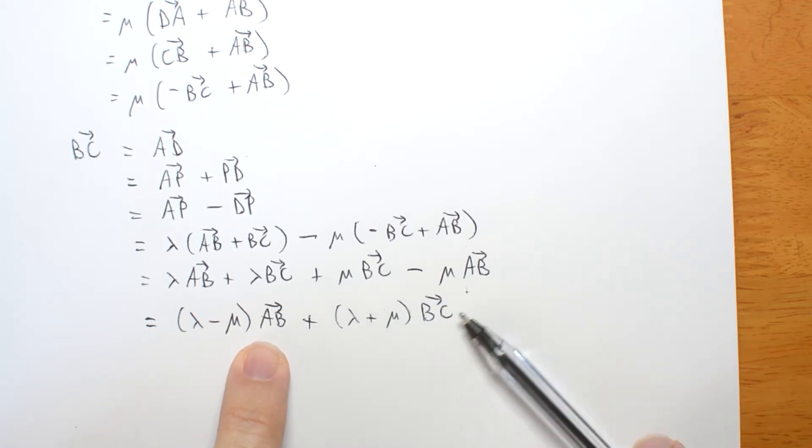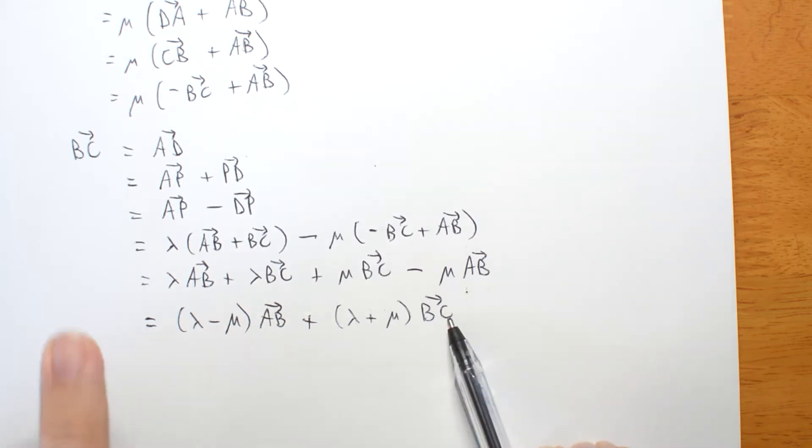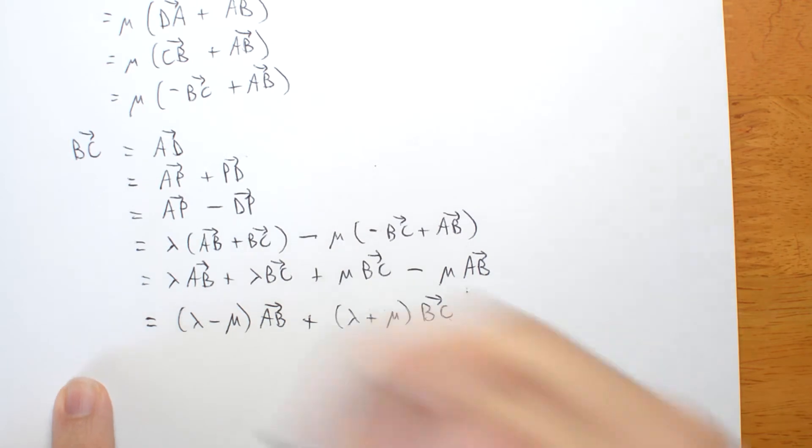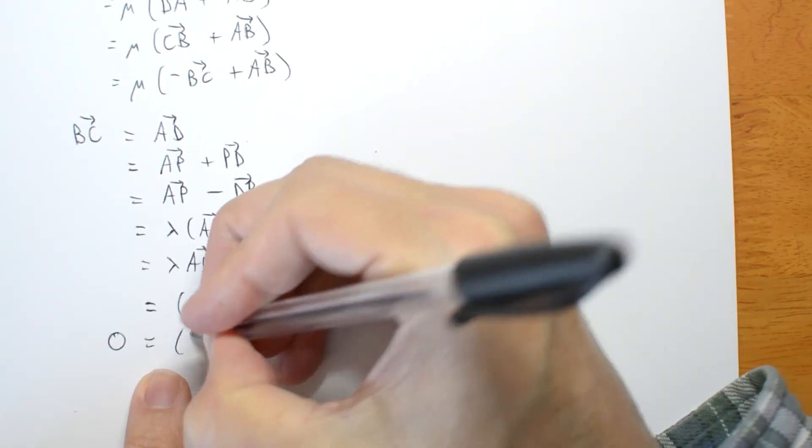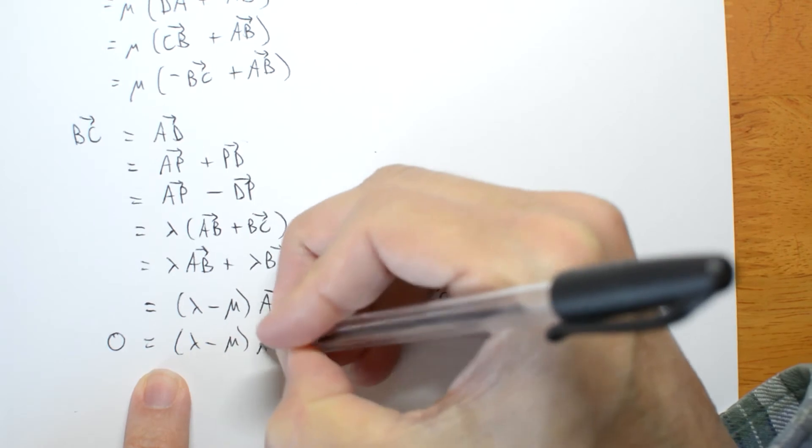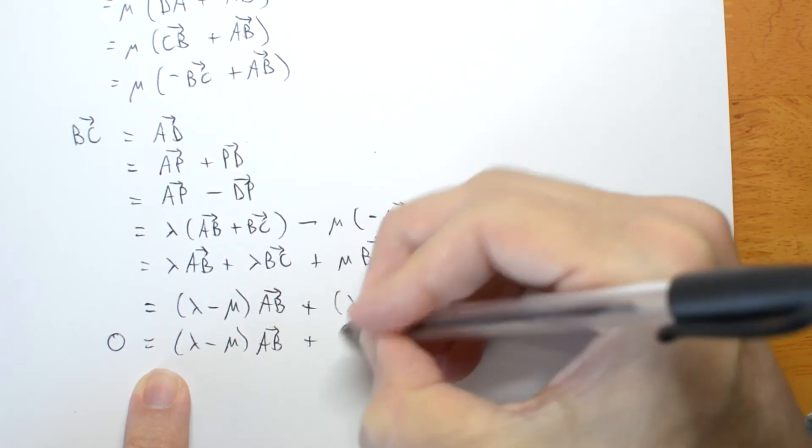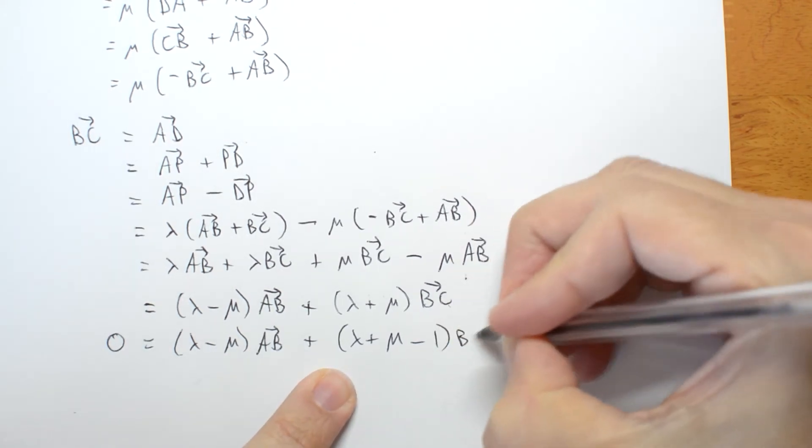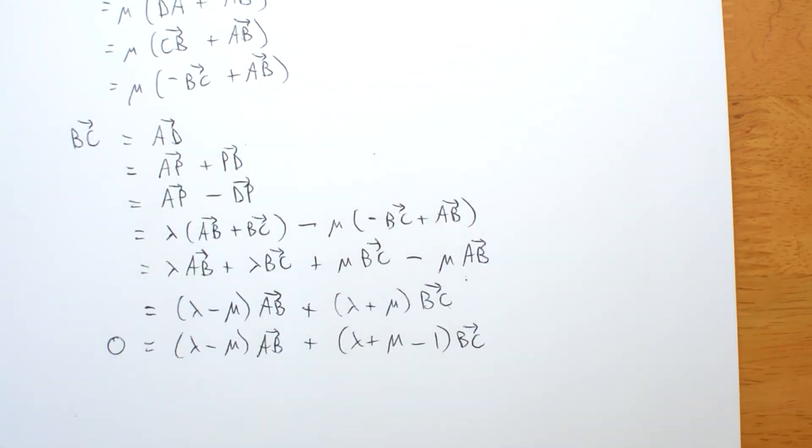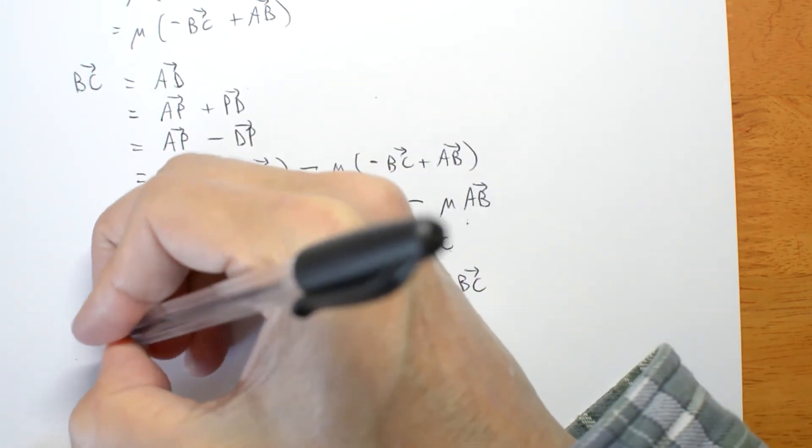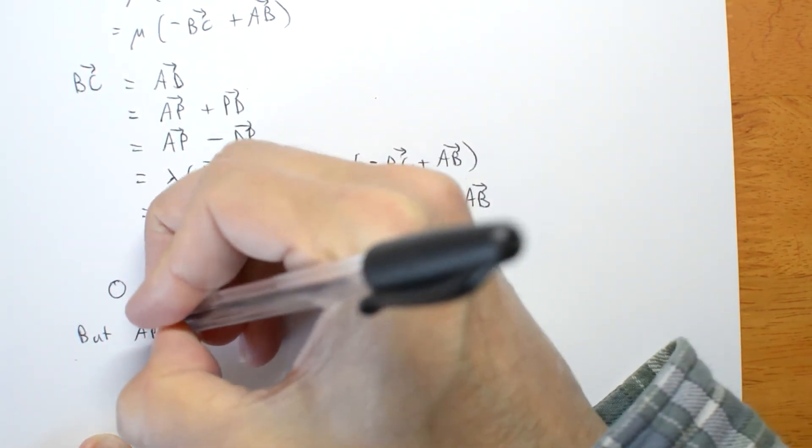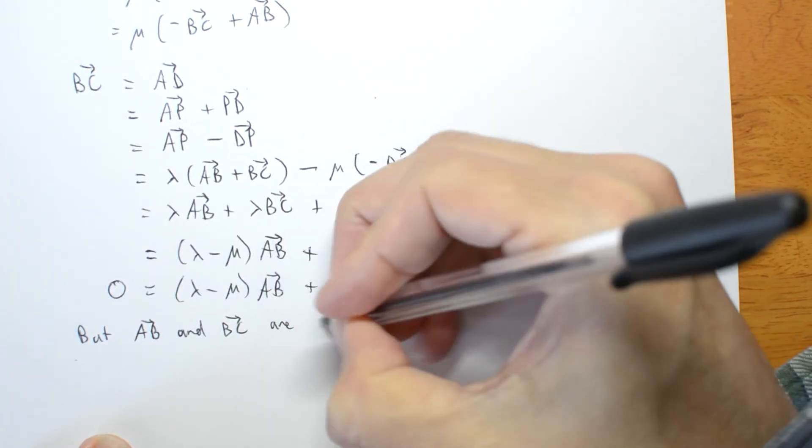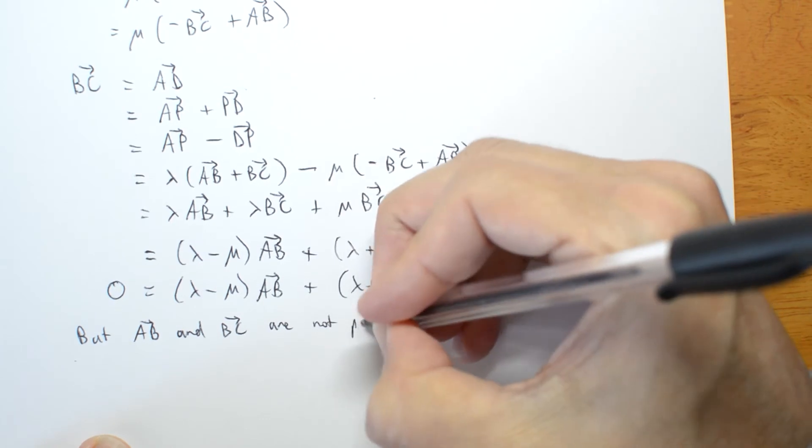But for me to use linear independence, I have to get an equation with zero on one side. So let's move this BC to this side. Zero is lambda minus mu AB plus lambda plus mu minus this one BC.